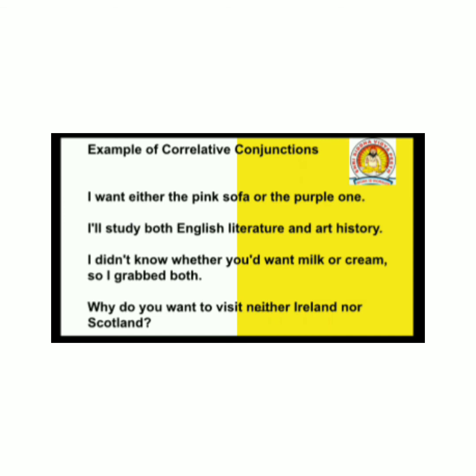Examples of Correlative Conjunctions: First — 'I want either the pink sofa or the purple one.' Second — 'I'll study both English literature and art history.' Third — 'I don't know whether you want milk or cream, so I gave both.' Fourth — 'Why do you want to visit neither Ireland nor Scotland?'